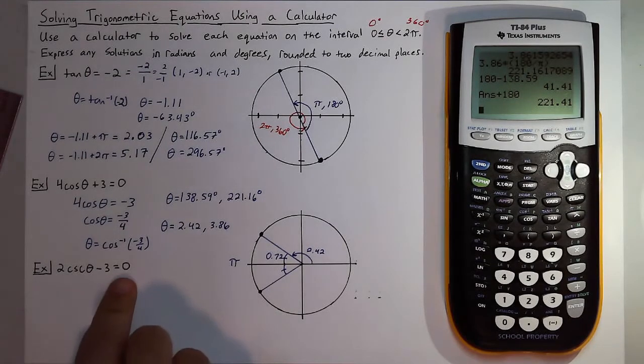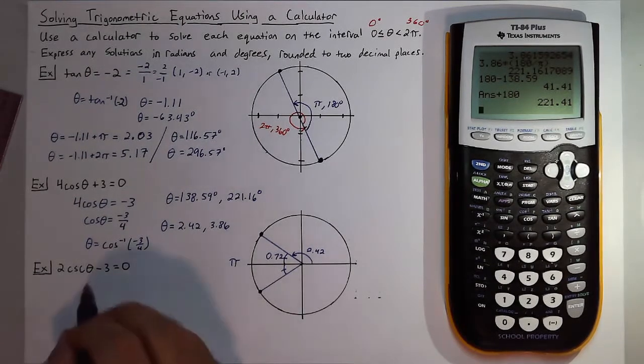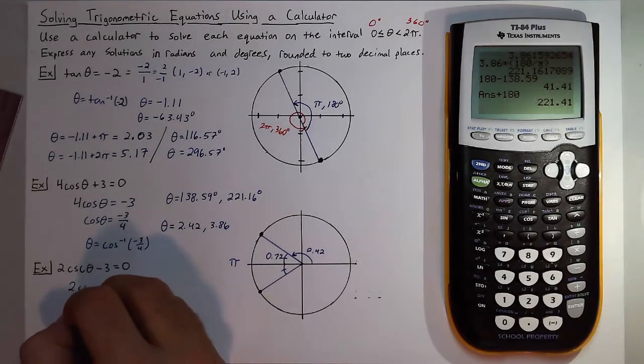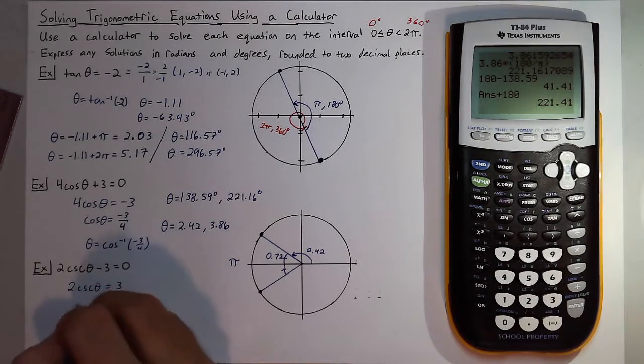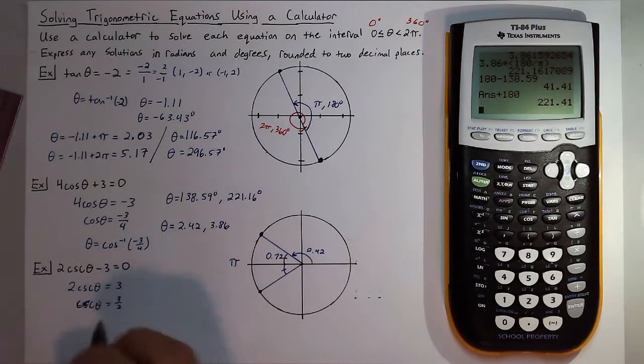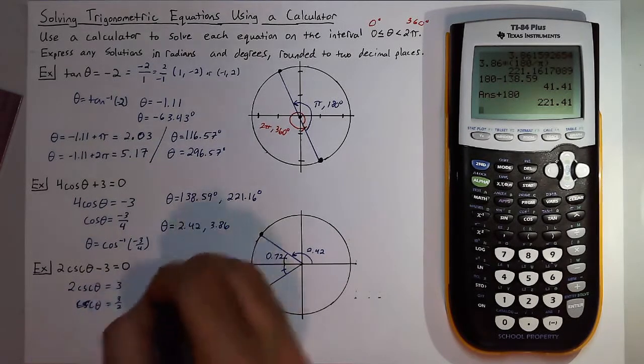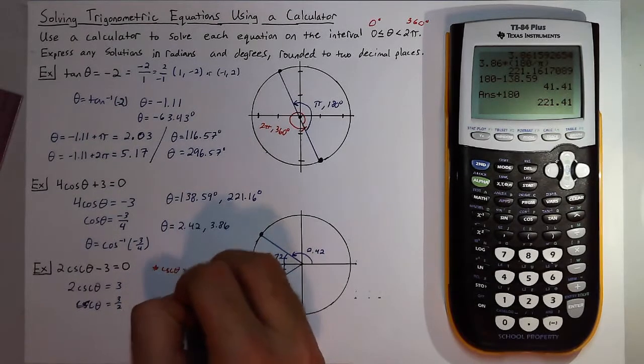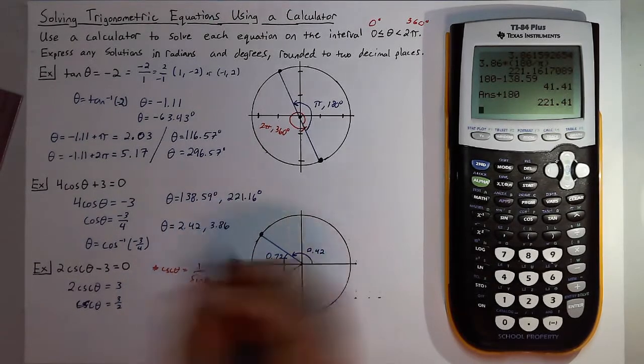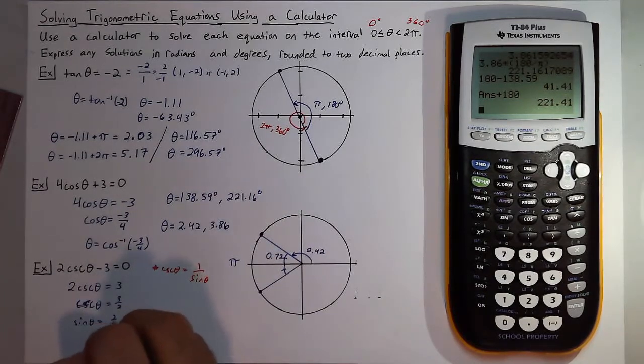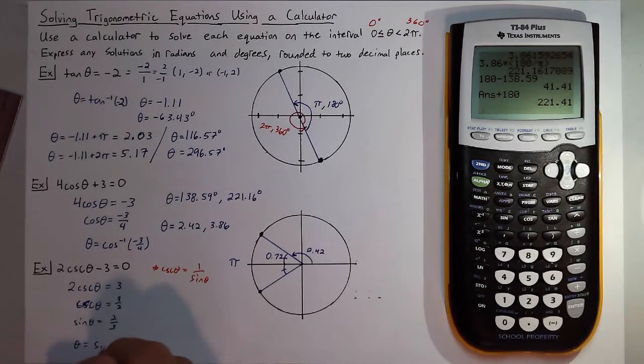Now let's do the last example: we have 2 cosecant of theta minus 3 equals 0. Let's get cosecant of theta by itself, so you have cosecant of theta is equal to 3 halves. Using the fact that cosecant and sine are reciprocals, I can get that sine of theta is equal to 2 thirds.